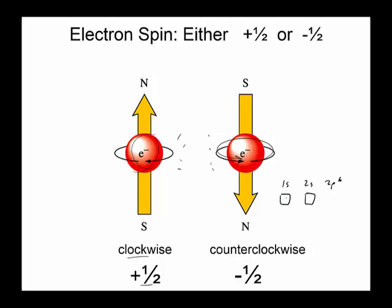So that's why when we did the orbital diagrams, we only had one box under the 1s because there's only one orbital. Then on the p, notice that when we did those orbital diagrams, the p actually had three boxes. This represented the three different orientations that the p orbital can be in. When you put an arrow up and down, one spins clockwise and the other goes counterclockwise.